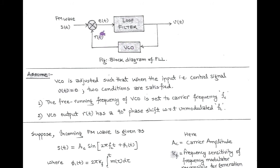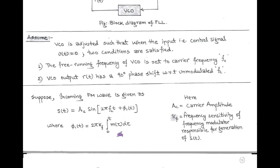The locally generated FM, denoted by RT, is multiplied by the incoming FM wave given by ST, where ST equals AC sine(2π·fc·t + φ1(t)), and φ1(t) equals 2π·kF·∫m(τ)dτ. Here, AC is the carrier amplitude and kF is the frequency sensitivity of the modulator, responsible for the generation of FM.